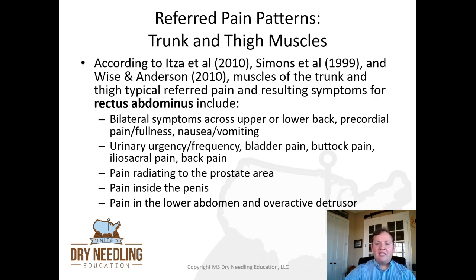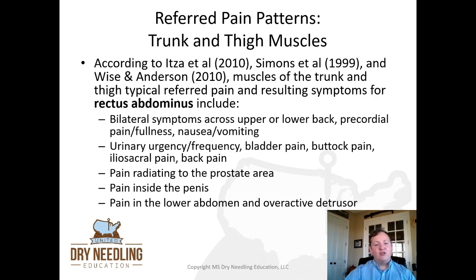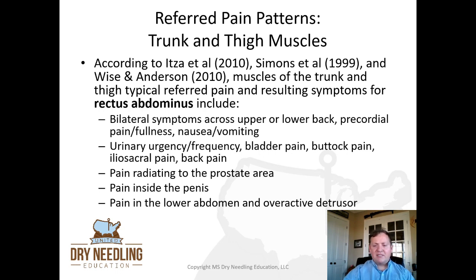Some of the referred pain and resulting symptoms for rectus abdominis include bilateral symptoms across the upper or lower back, precordial pain, fullness, nausea and vomiting, urinary urgency, frequency, bladder pain, buttock pain, iliosacral pain, back pain, pain radiating to the prostate area in individuals with male anatomy, pain inside the penis, pain in the lower abdomen, and an overactive detrusor as well. The rectus abdominis does not get enough love and attention, especially in orthopedic practice, but in the pelvic floor world we know how implicated rectus abdominis is.